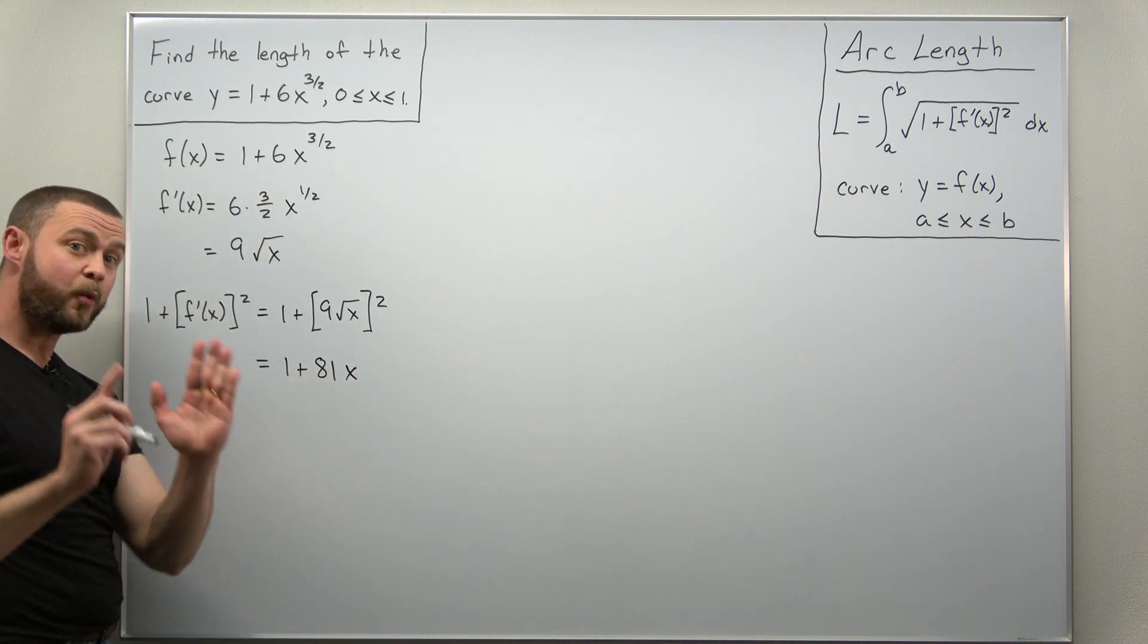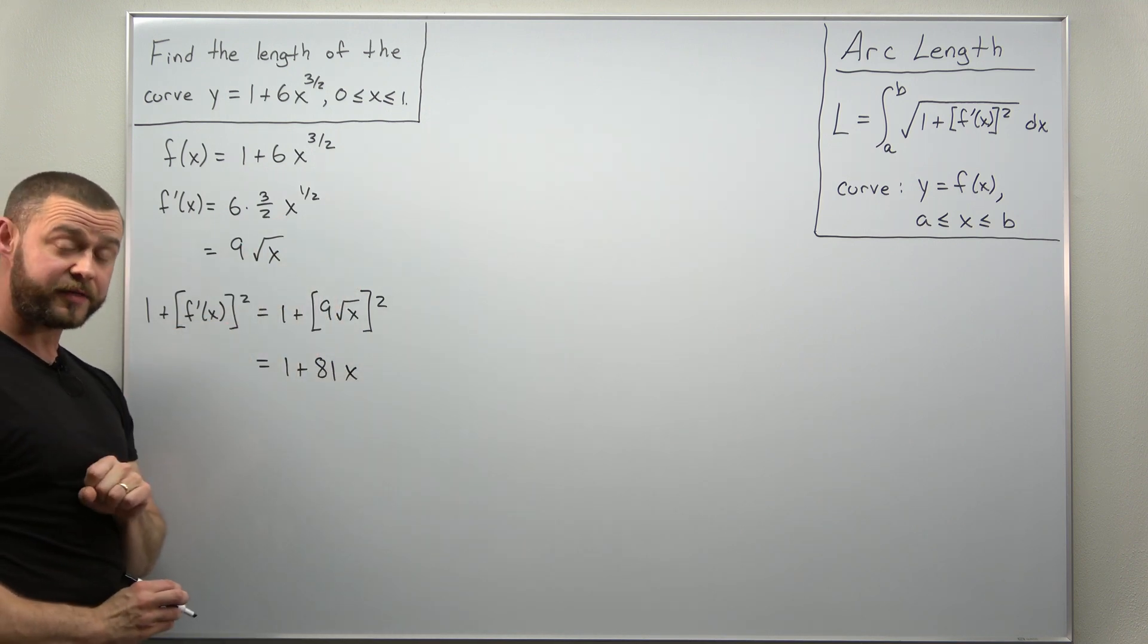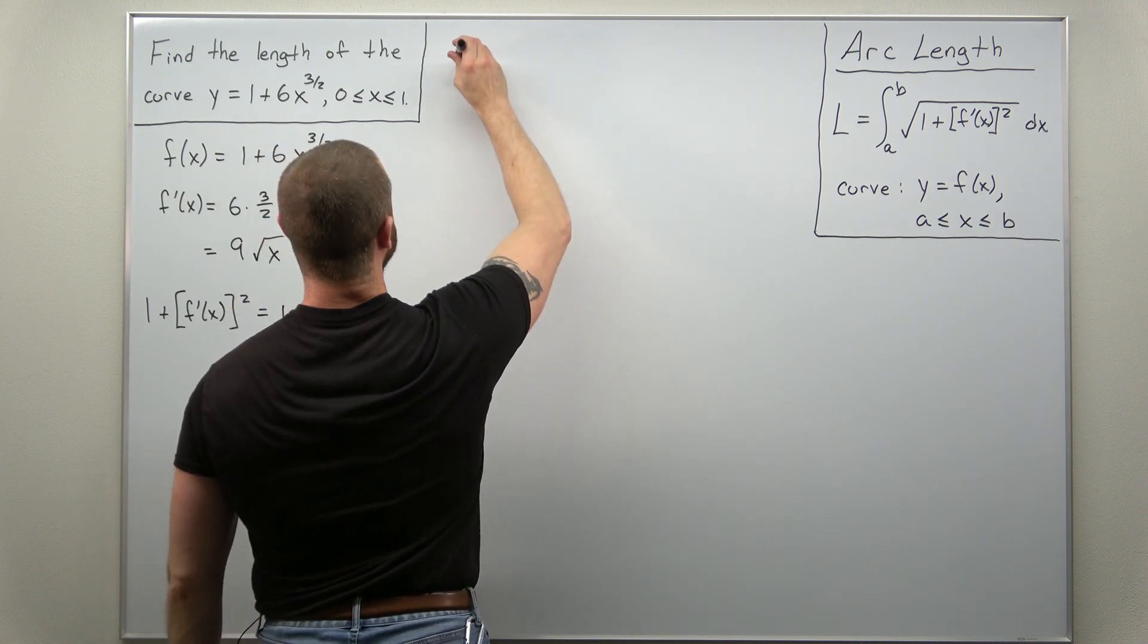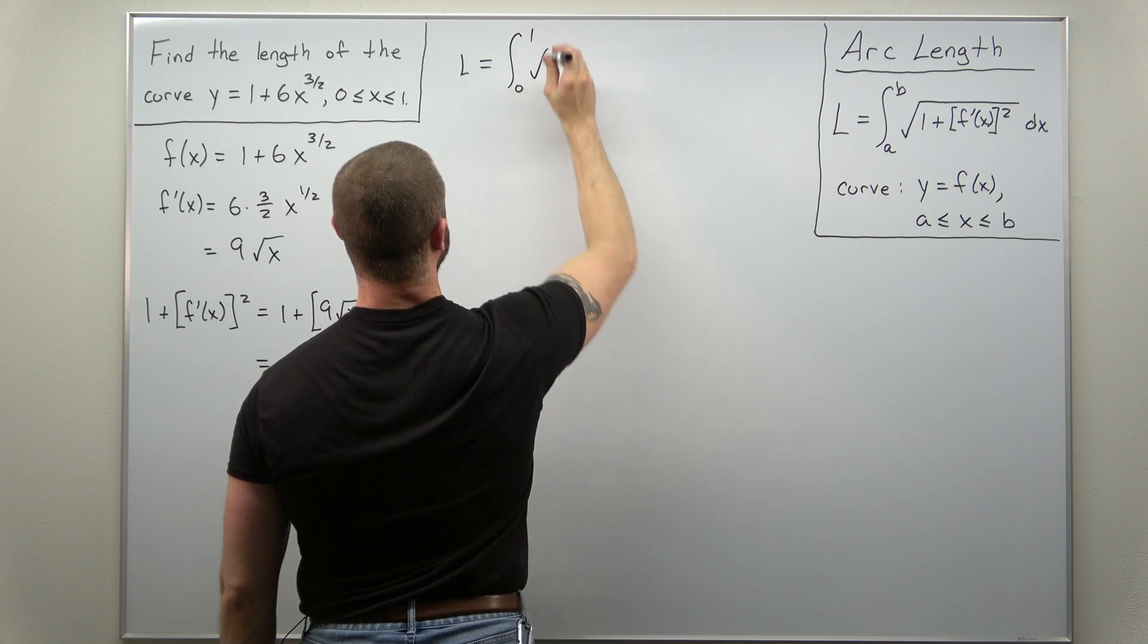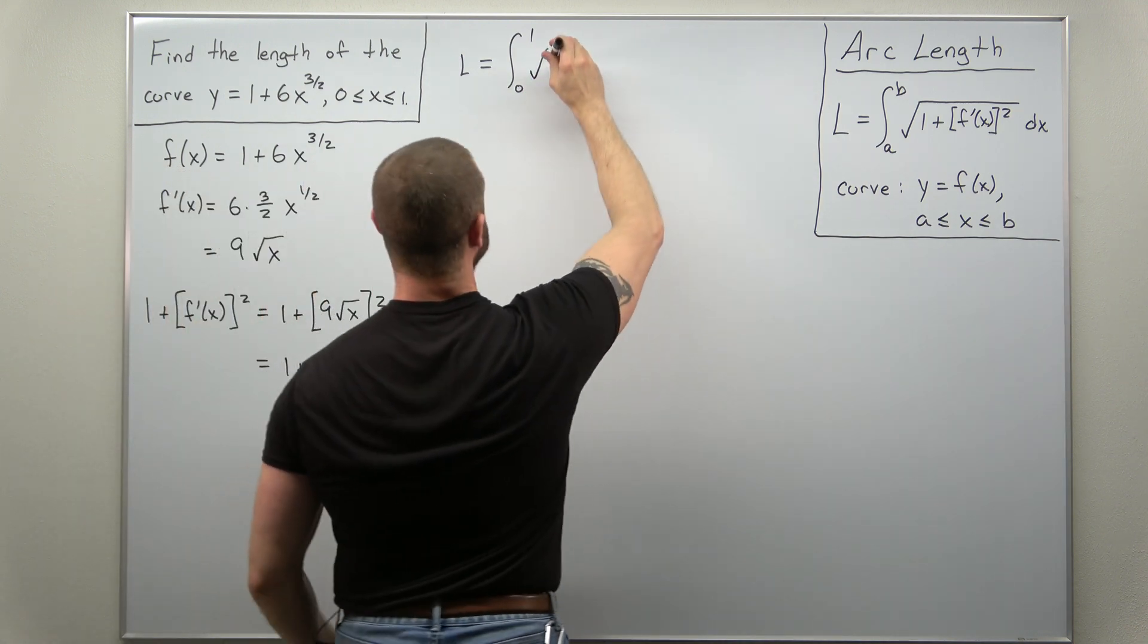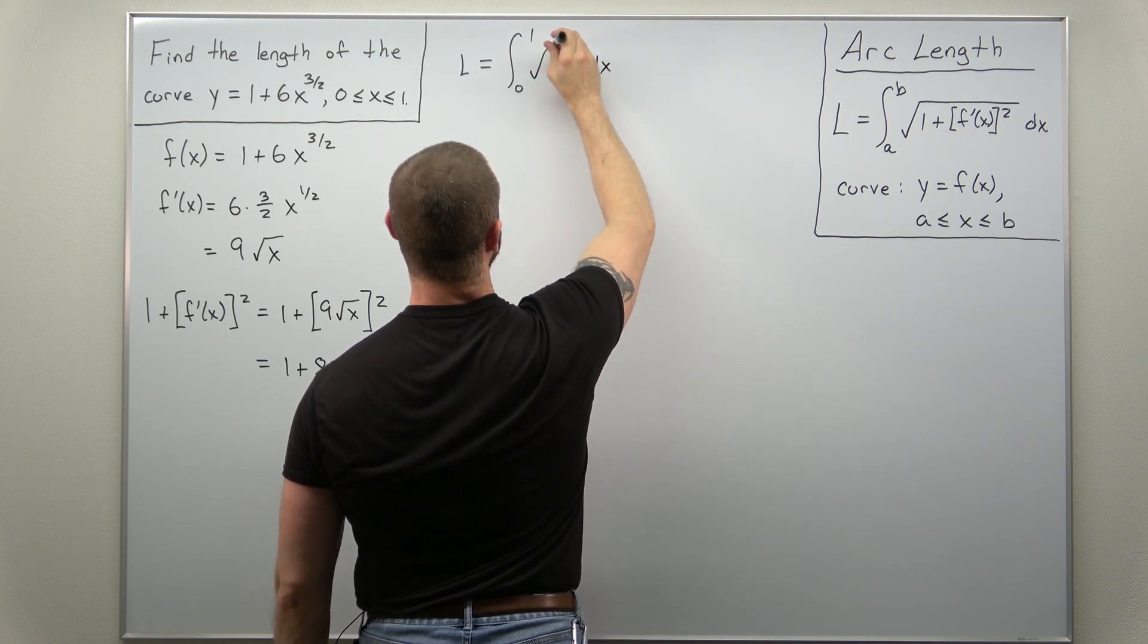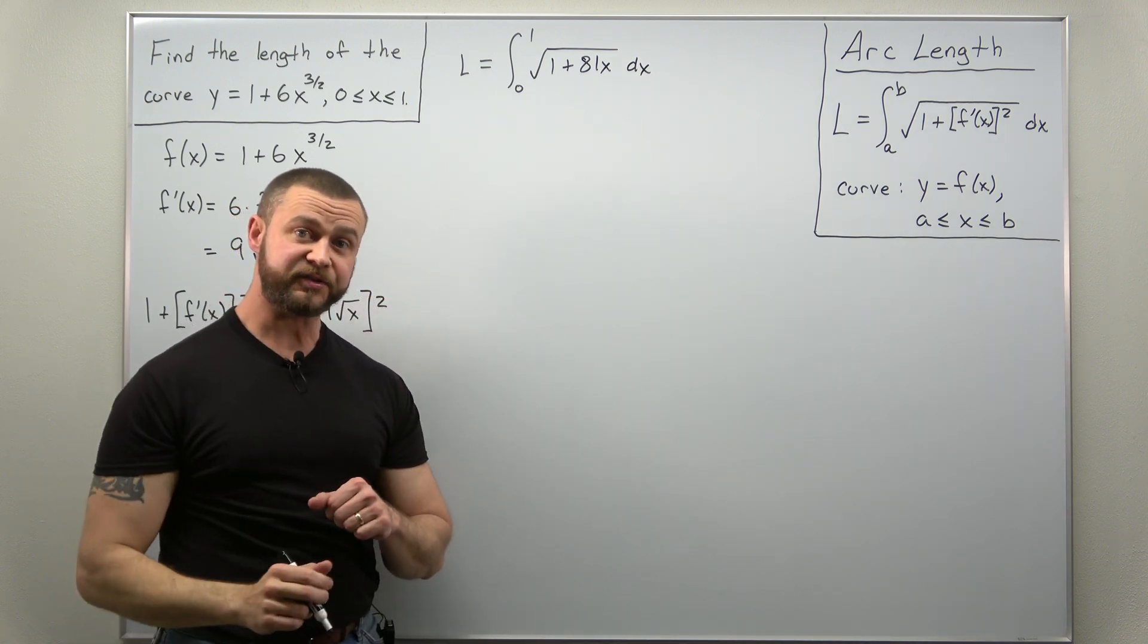So this is basically what is inside the square root in our arc length integral. So we have everything we need to set this up. The arc length here, this is an integral from 0 to 1 of the square root of 1 plus 81x. And now we just need to integrate this.